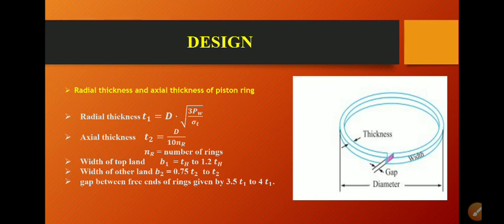The axial thickness t2 is equal to capital T divided by 10 times nr, where nr is the number of rings. The width of the top land is generally taken as th to 1.2th, and the width of other lands is generally taken as 0.75 t2 to t2.